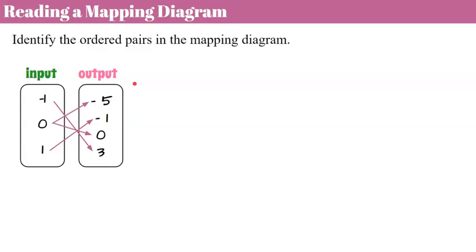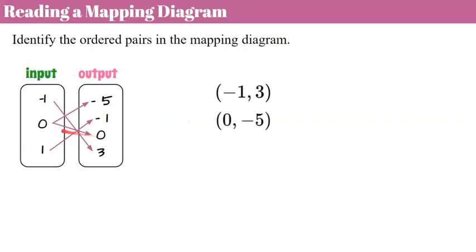Now let's talk about reading a mapping diagram. We're going to identify the ordered pairs in the mapping diagram. We have our set of inputs and our set of outputs, and we can see that they're all mapped. Our first ordered pair: negative 1 maps to 3, so (−1, 3). When x is negative 1, the output is 3. Next, 0 maps to negative 5, so (0, −5). But 0 also maps to 0 — so 0 maps to two different outputs. And our last is 1, which maps to negative 1, so (1, −1).